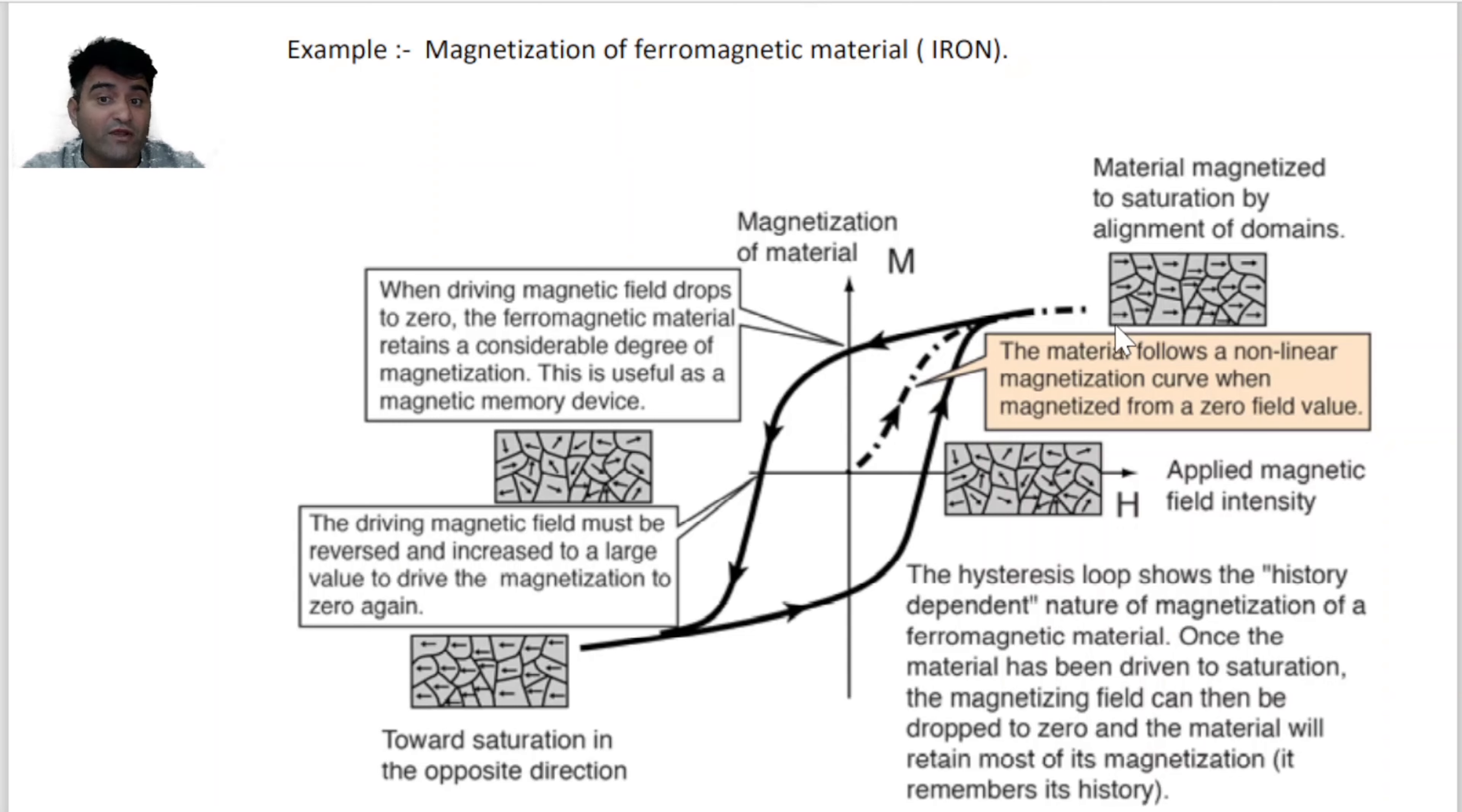Lekin humne jo observe kiya, ki jab hum magnetic field ko reverse direction me badhayenge, to ye same path follow nahi karega. Instead of same path, ye this path follow karega. Ek aisa point ayega where external magnetic field ki value zero hai, but still there is magnetization in the ferromagnetic material.